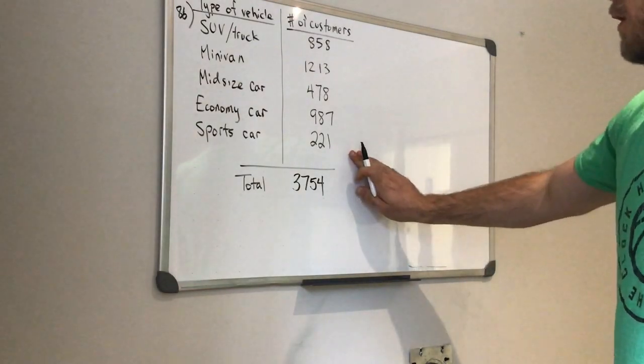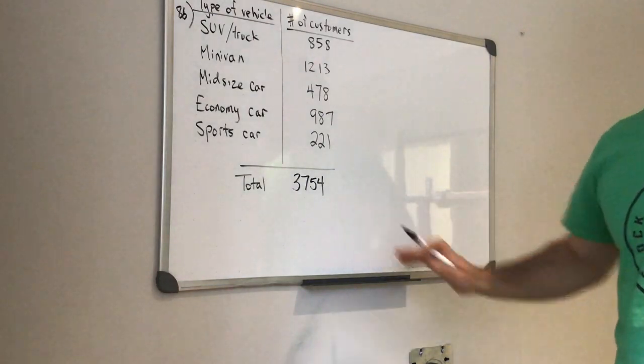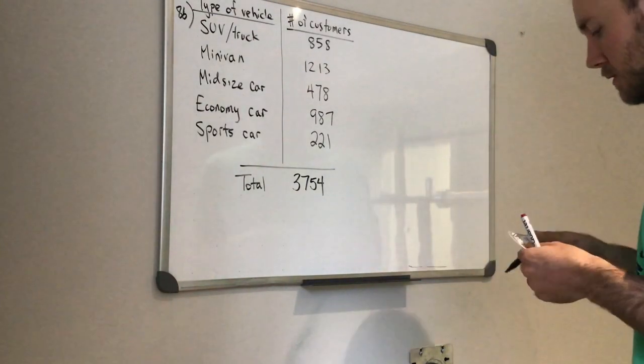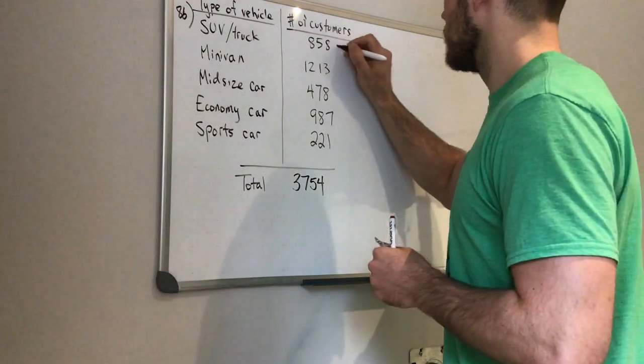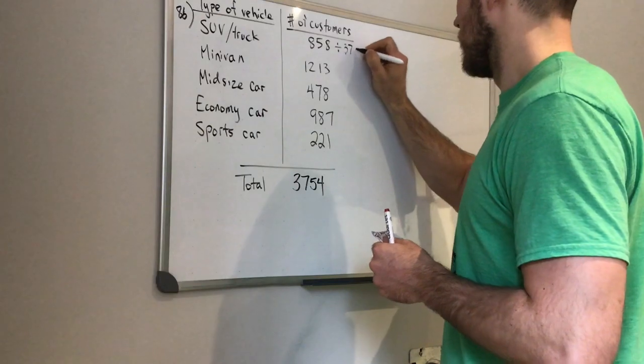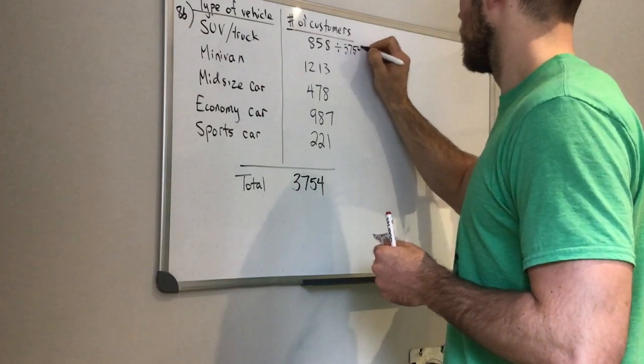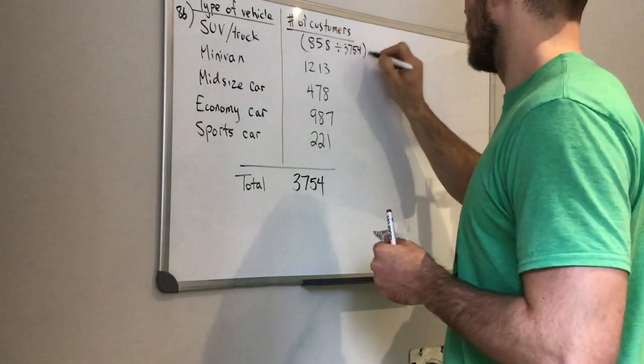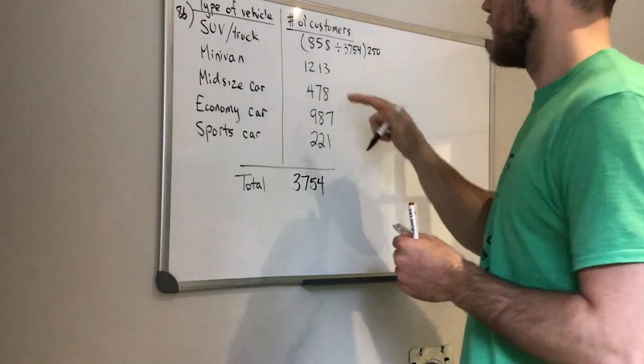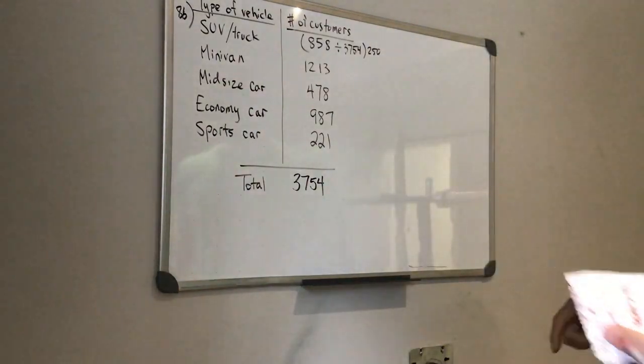So first off you can add up all the customers to get a total here, and then using that total we are going to calculate some percentages. So if I divide each of these by 3754, and then I multiply all of that by 250 because we have that many surveys,